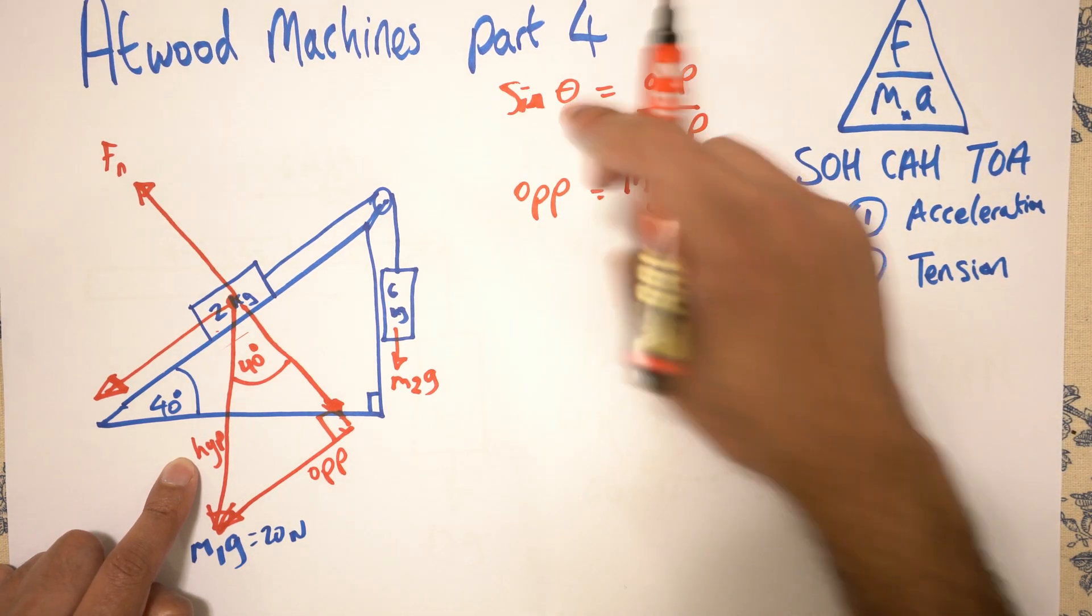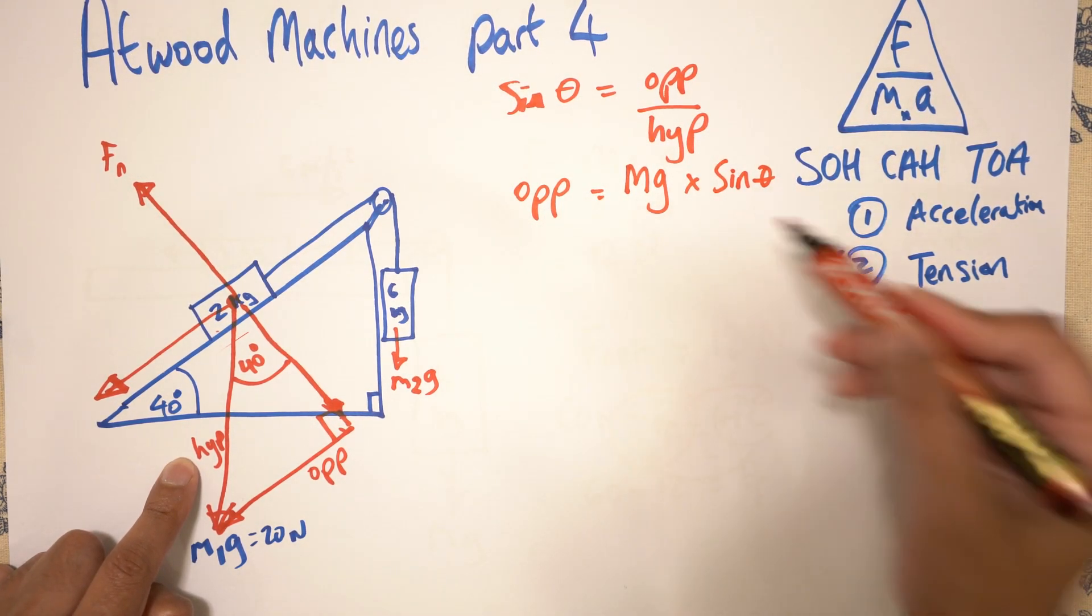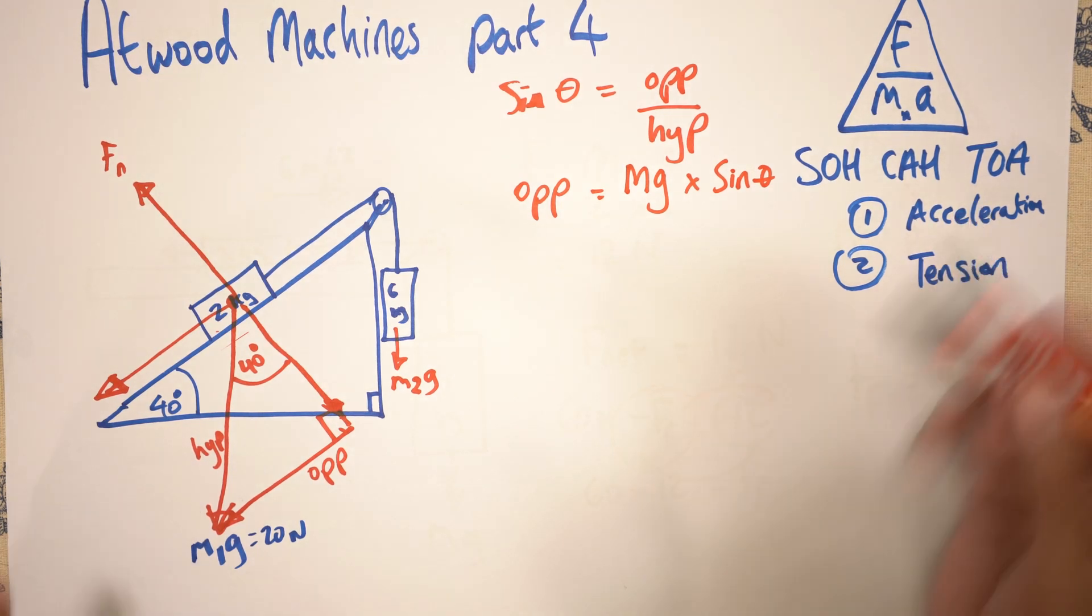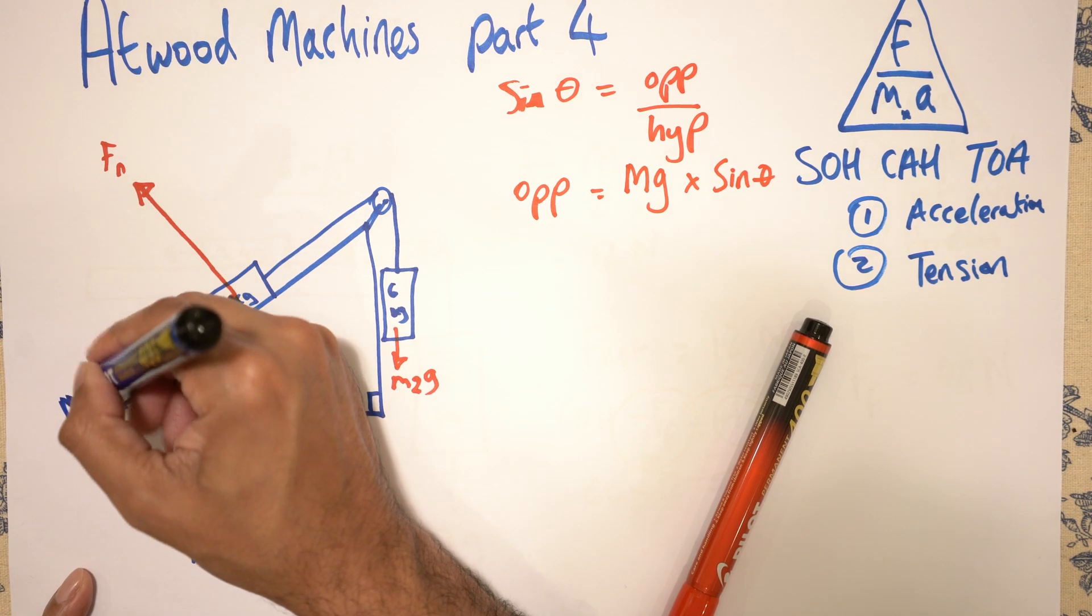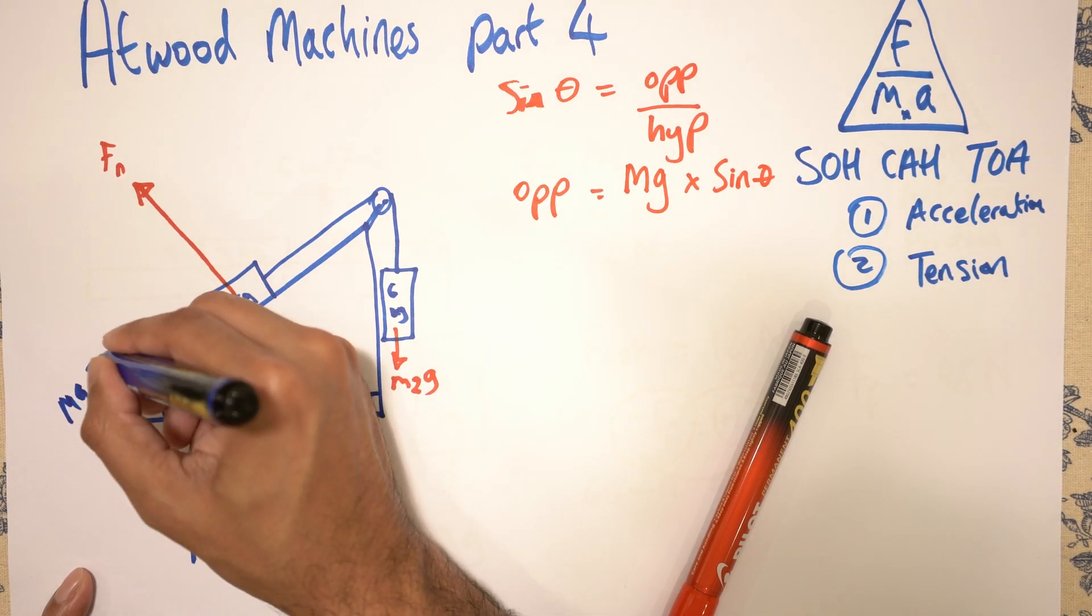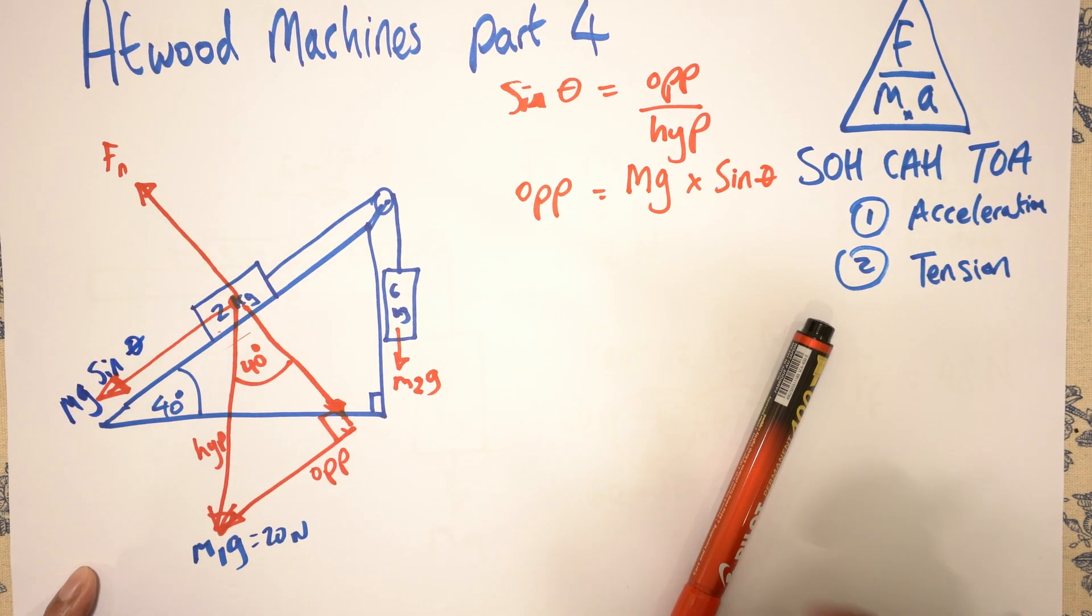So just know that what I've done, you're taking it over there, you're multiplying. So M1G sin theta is what we're after. So that's what I'm going to write over here. M1G sin theta.